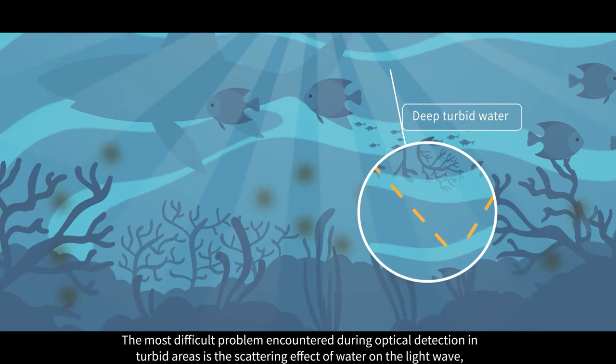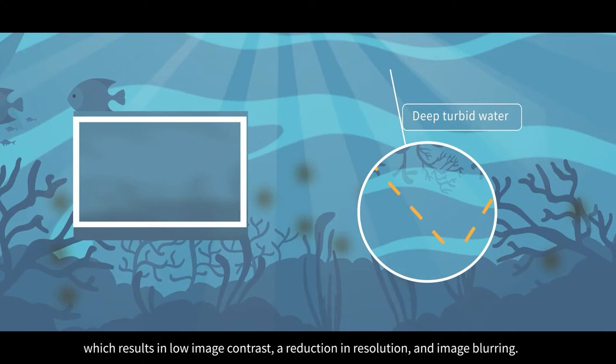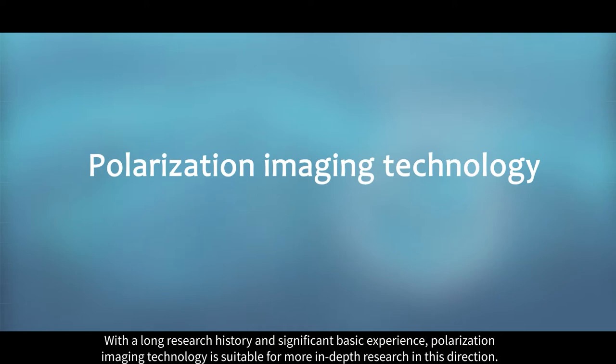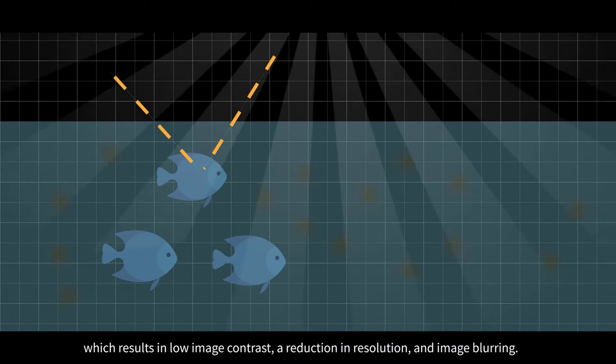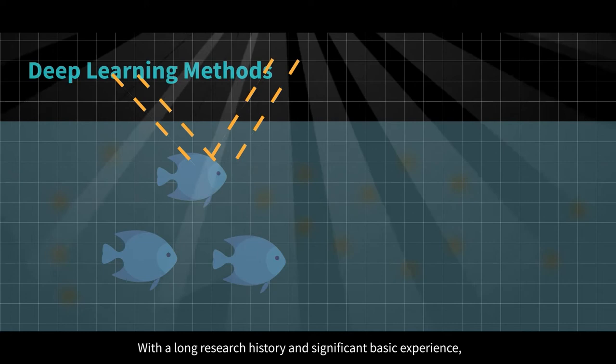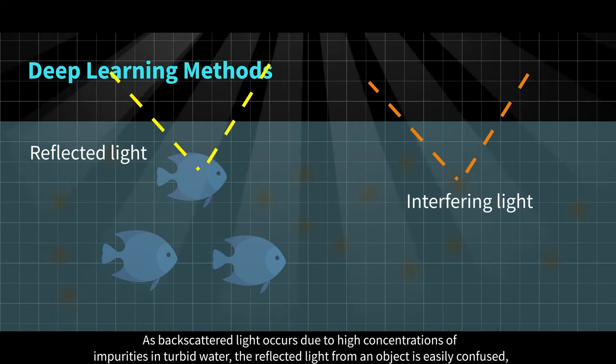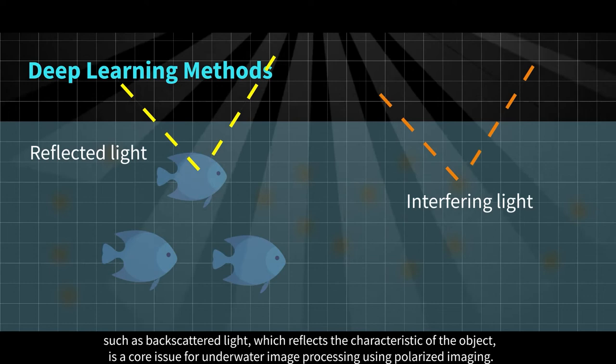The most difficult problem encountered during optical detection in turbid areas is the scattering effect of water on the light wave, which results in low image contrast, a reduction in resolution, and image blurring. With a long research history and significant basic experience, polarization imaging technology is suitable for more in-depth research in this direction. As backscattered light occurs due to high concentrations of impurities in turbid water, the reflected light from an object is easily confused, making it difficult to distinguish the object from the environment. Therefore, the division of reflected light from interfering light, such as backscattered light, which reflects the characteristic of the object, is a core issue for underwater image processing using polarized imaging.